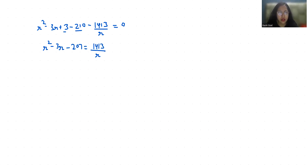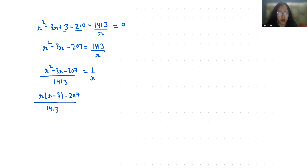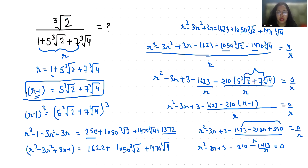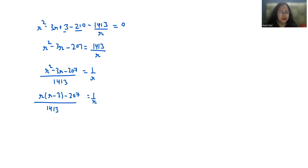So R squared minus 3R minus 207 over 1413 equals 1 over R. Taking R as common: R times (R minus 3 minus 207 over 1413) equals 1 over R, and the value of R is what we defined. So let's replace it.